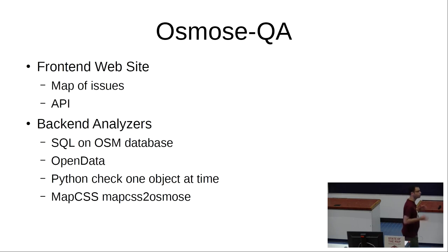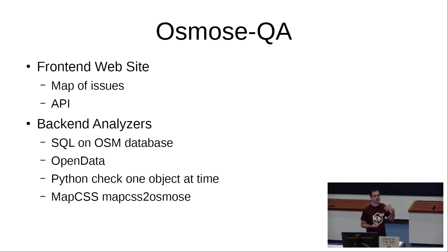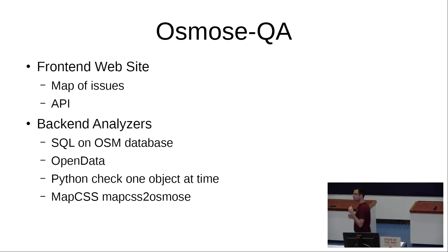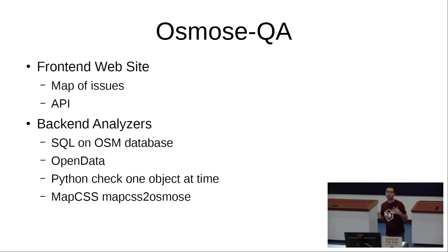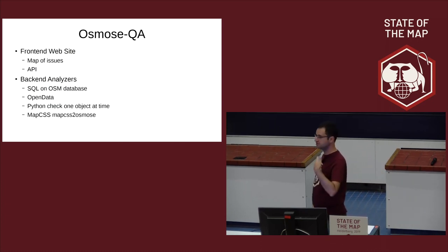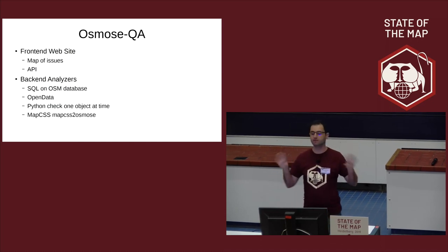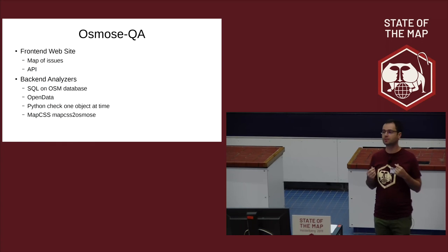Osmose is based on a website where you can see the issues. It's a map with pins — each pin is a report of an issue. You can view the data of the issue and interact with it. The issues are produced by a set of analyzers. Analyzers are rules running on the server. The back-end has 20 servers running around the world, running continuously to check full planet data every day,